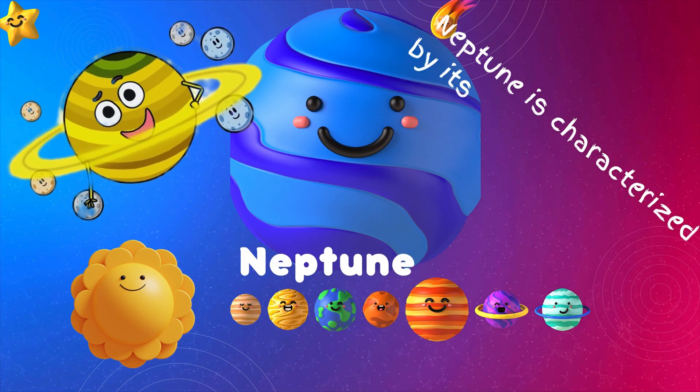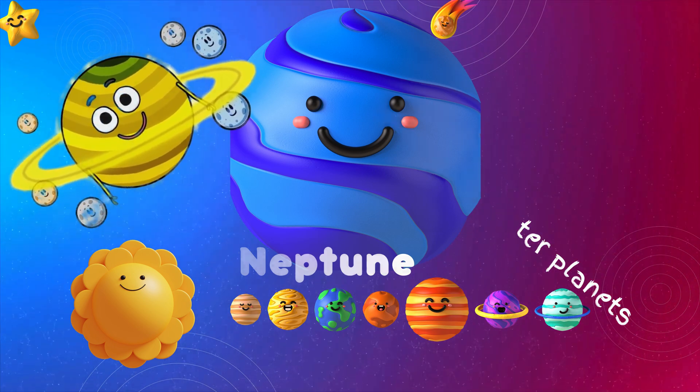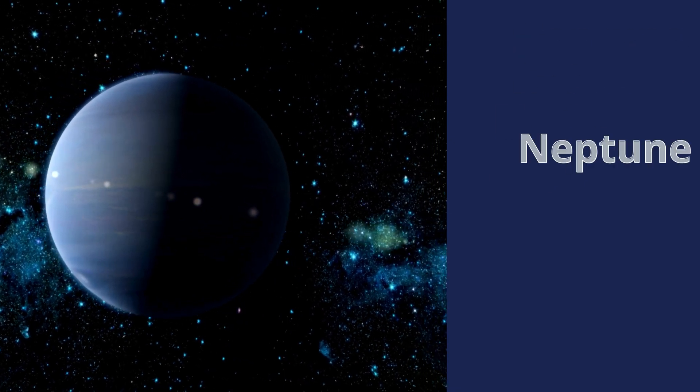Neptune is characterized by its dark blue color and is considered the coldest among the outer planets.